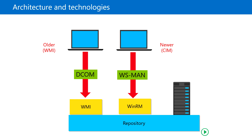CIM is a newer technology based on an open cross-platform standard, meaning we can use it on Linux and Windows. WMI has been available on Windows operating systems only, but CIM can be used for both Windows and Linux systems. Both technologies provide a way to connect to the common information repository, also known as the WMI repository. PowerShell 3.0 and newer support both WMI and CIM, but earlier versions of PowerShell support only WMI.